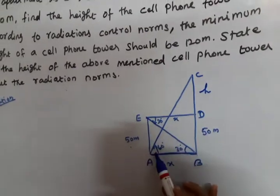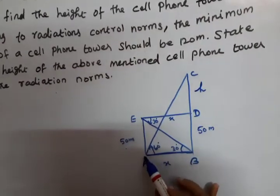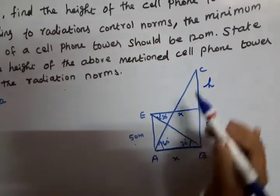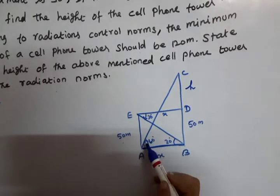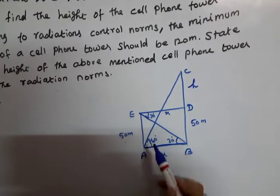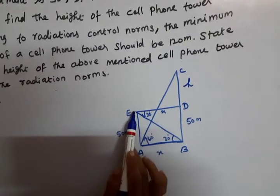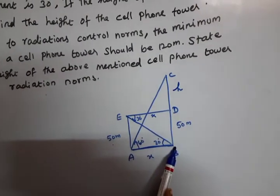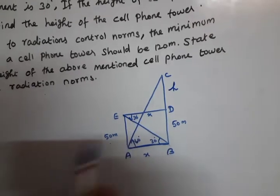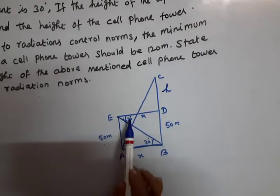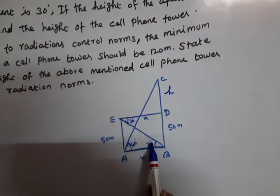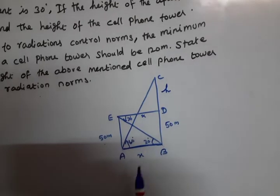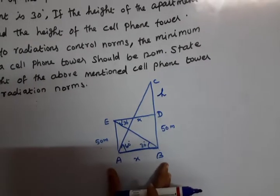Angle of elevation is 60 degrees from the foot of the apartment to the top of the tower. Angle of depression from the top of the apartment to the foot of the tower is 30 degrees. Since alternate angles are equal, we use this in triangle CAB.